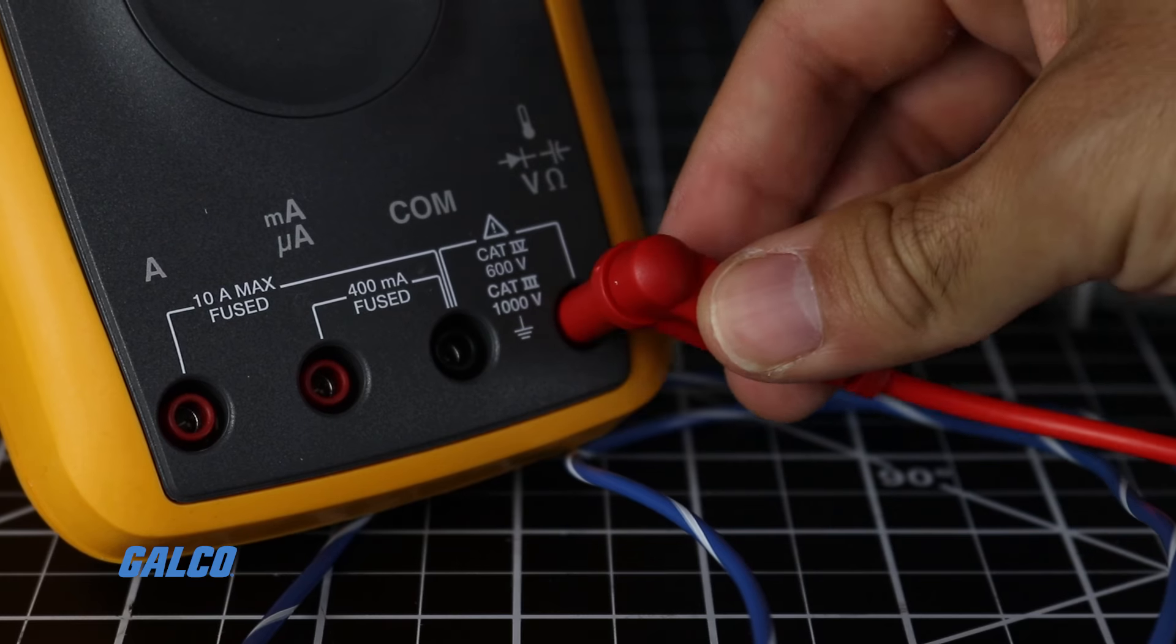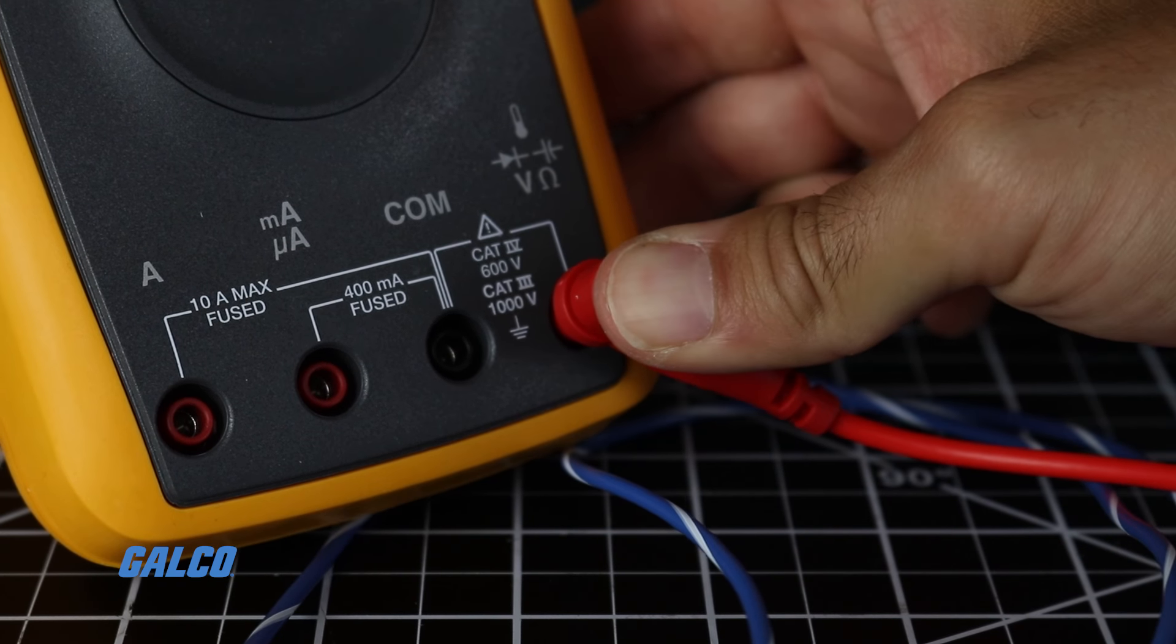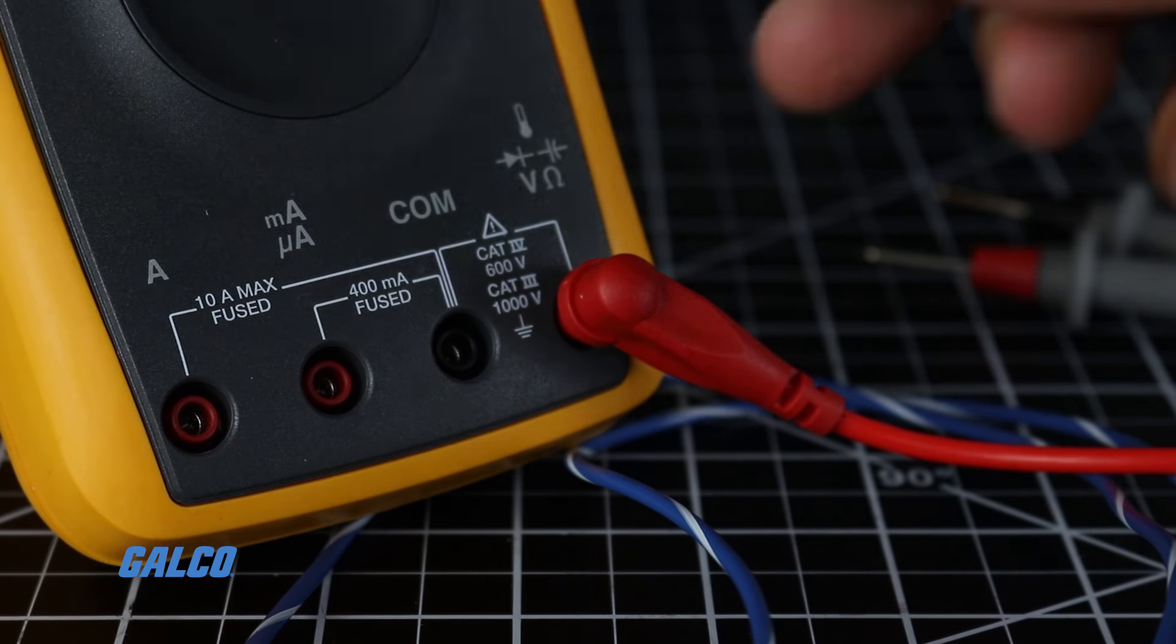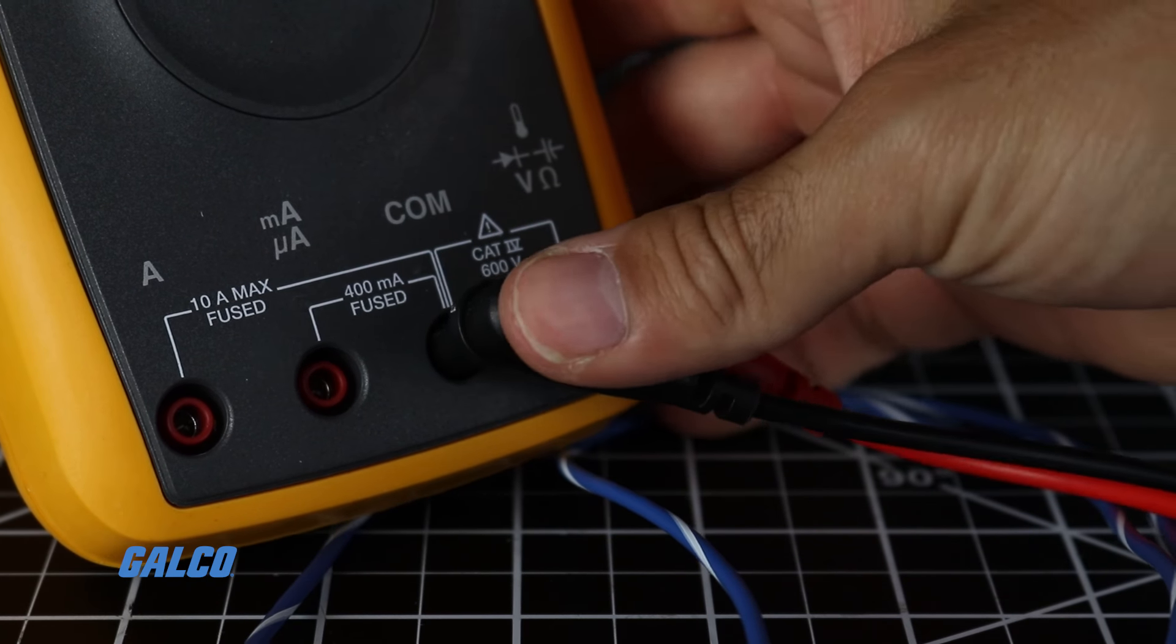Connect your red multimeter lead into the port marked for voltage for the correct range that you are testing. You can keep the black lead in the common position.